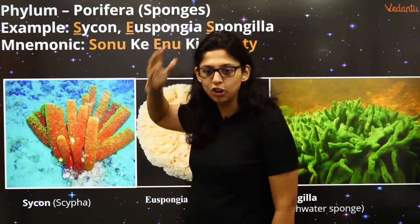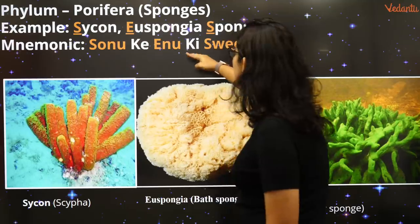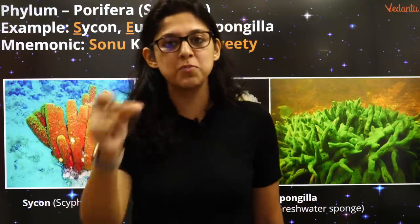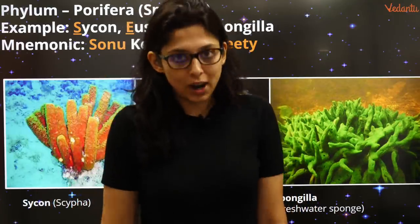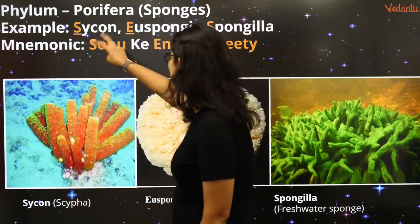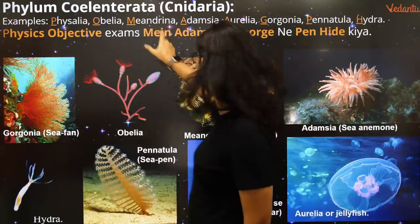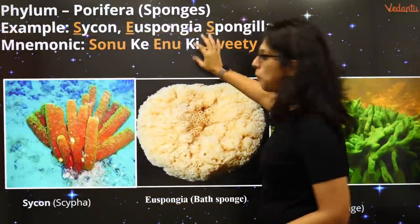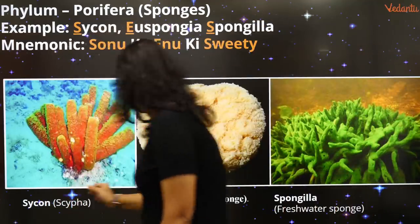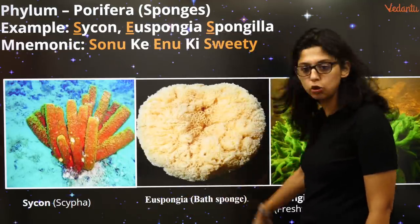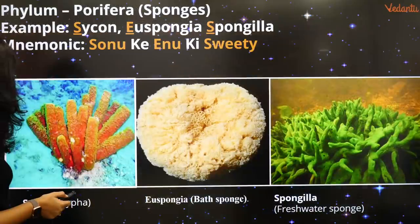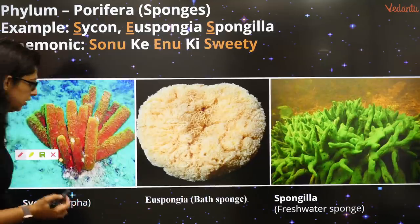Phylum Porifera: 'Sonu ki Enu ki Sweetie.' Sonu = Sycon, Enu = Euspongia — this is a very very important MCQ that comes in exams again and again for KVPY, NEET, AIIMS, JIPMER. Euspongia is a bath sponge — that's an MCQ question. Write it down: Euspongia = bath sponge.